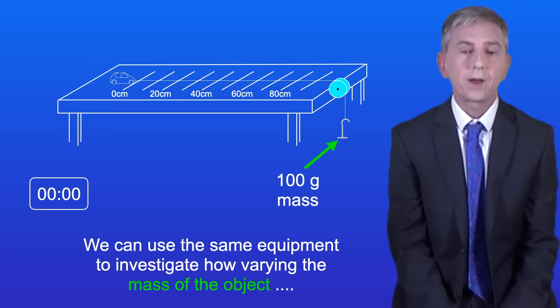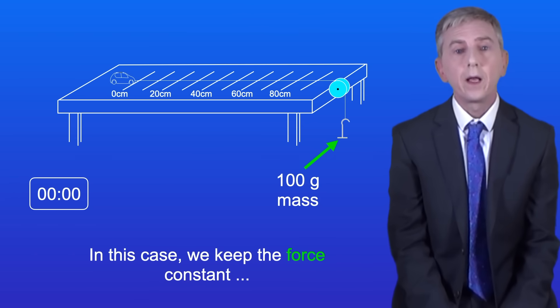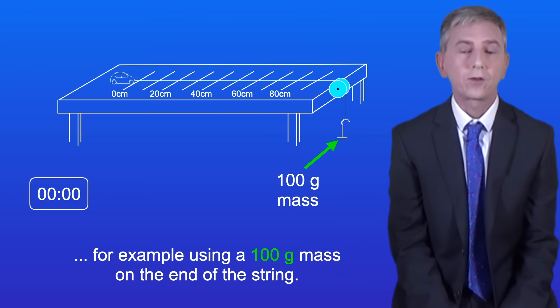We can use the same equipment to investigate how varying the mass of the object affects the acceleration produced by a constant force. In this case we keep the force constant, for example using a 100 gram mass on the end of the string.